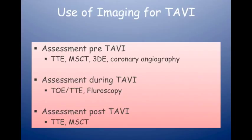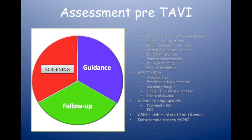During the procedure, it's really 90% fluoroscopy and maybe 10% echo. But the echo is very important to look for complications and at the end of the procedure to assess the result of valve placement — systolic and diastolic function. In follow-up, it's really all transthoracic echocardiography.